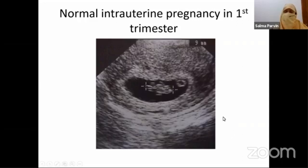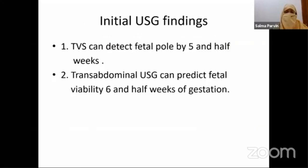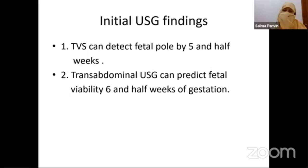The placental tissue is getting formed along the anterior wall of the uterus. The initial ultrasonographic findings come from transvaginal ultrasound, not transabdominal ultrasound — it gives a real picture of the gestational state. Transvaginal ultrasound can detect the fetal pole by five and a half weeks, whereas transabdominal ultrasound can predict fetal viability by six and a half weeks.